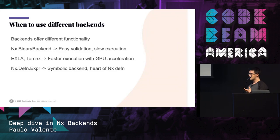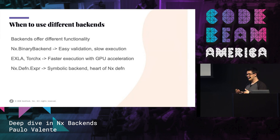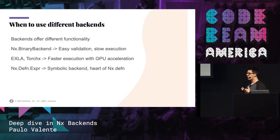EXLA is based on XLA, which is the TensorFlow backend. And TorchX is based on PyTorch. Both can use GPU acceleration, but EXLA also has the capability of compiling things down, and we'll talk about that forward as well.